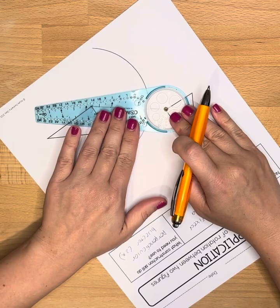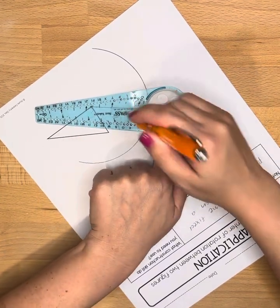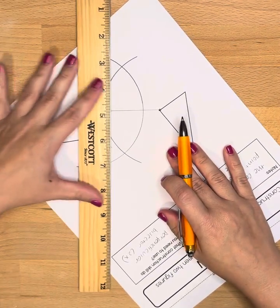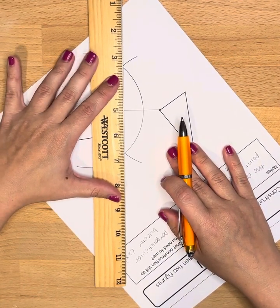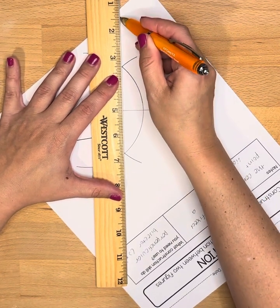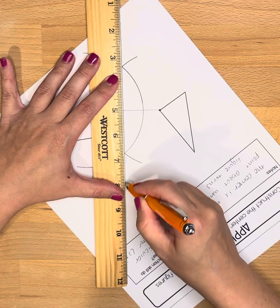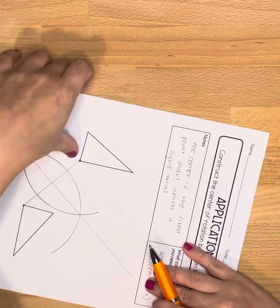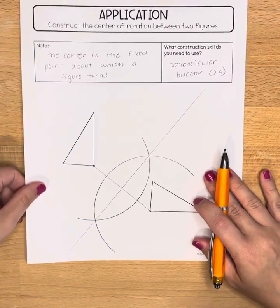Then I'm going to reverse that. And I have my two intersections, and I'm going to make a nice big line that connects those two intersections. I'm going to turn my paper right side up again for a moment.